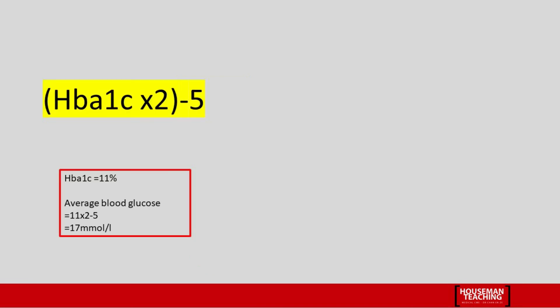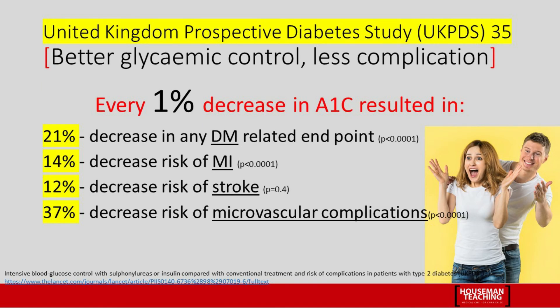You can convert the HbA1c value to average blood sugar in millimoles per liter by taking the HbA1c value, multiplying by 2, and subtracting 5. For example, if Mr. John's HbA1c is around 11, then 11 × 2 − 5 = 17. That means Mr. John's average blood sugar over the past 8 to 12 weeks is around 17 mmol/L. His sugar is not controlled, so his home monitoring is probably not accurate. You explain to him that certain interventions are needed to control his blood sugar.